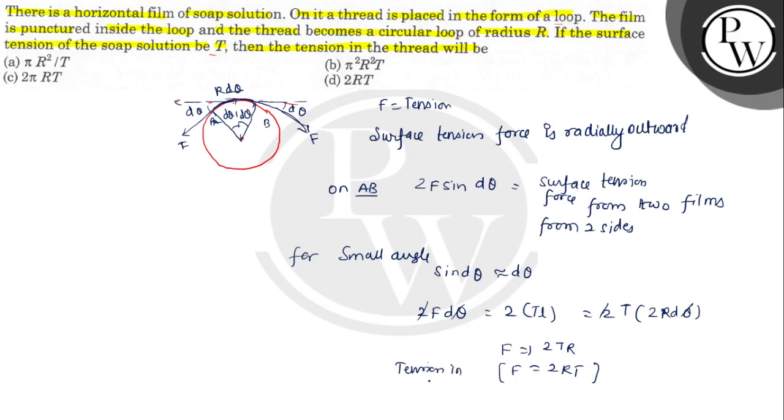Tension in thread: F is equal to 2RT. What is the answer? The answer is option number D. That is F equals 2RT. This is the final answer. I hope you understood it well. Best of luck.